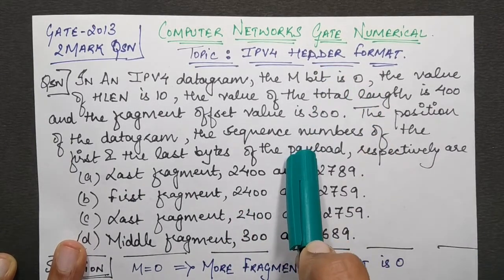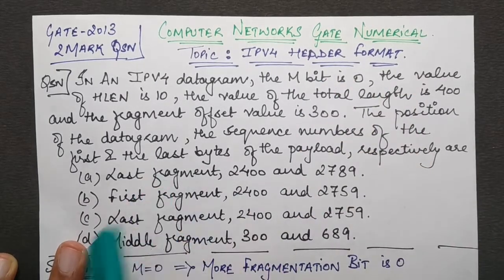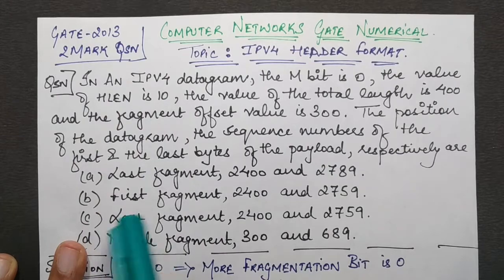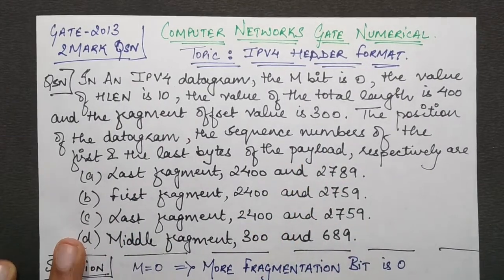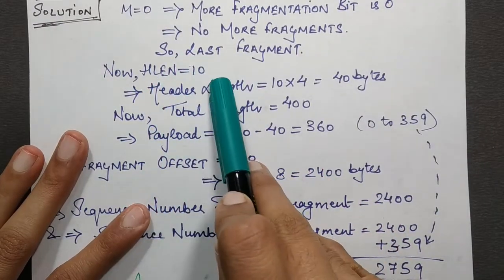Since M bit was 0, the first thing you can conclude directly from this is that this is the last fragment because there are no more fragments. So it can be either option B or C. Now let's check the other things.